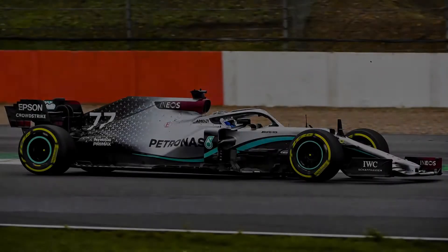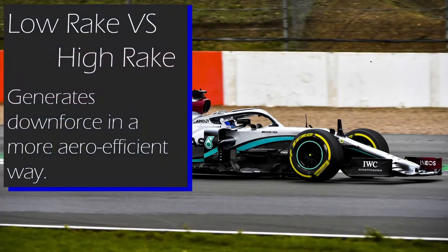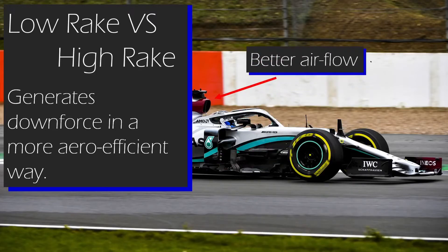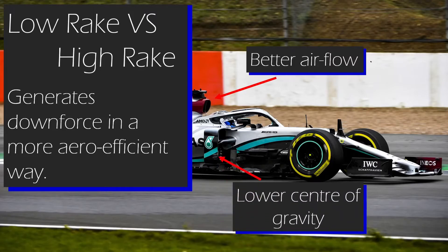At this point, I wouldn't blame you for thinking, why don't all cars run high rake, as you can generate the same amount of downforce for less floor area? It's because the advantage of a low rake car is that it will generate downforce in a more aerodynamically efficient way, because with high rake the back is sticking up higher into the air, and with low rake the airflow is better as the car won't be that high up, so the air will flow over the car more easily. Also, its centre of gravity will be lower, which helps with performance in the corners and tyre degradation.